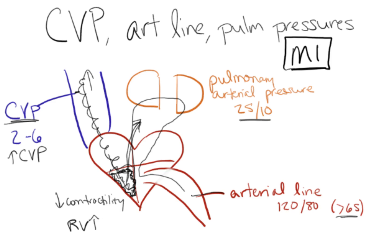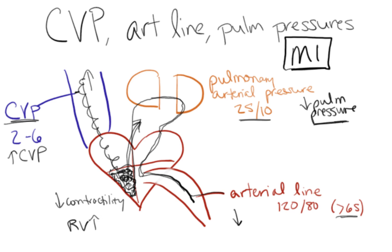Despite your high CVP — so it looks like your fluid status is good — you're not getting blood out of your right ventricle. So your pressure in your pulmonary artery and in your lungs is going to be low, because the problem is in your right ventricle. If your right ventricle can't pump blood into your lungs, the blood isn't going to arrive in your lungs and so your pulmonary arterial pressure is going to be low. Not much blood will get through to the left side of your heart, so the blood pumped out into your aorta is going to be less and you're going to have a decreased systemic pressure — a low MAP less than 65.